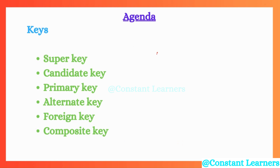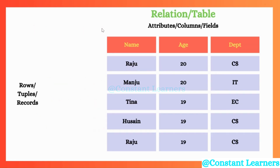Now you would ask why relational database management system? Because keys are nothing but the attributes. And what are attributes? Attributes are nothing but the columns or the fields in the relations. Relations are nothing but tables. So these columns here are known as the attributes and keys represent these columns.